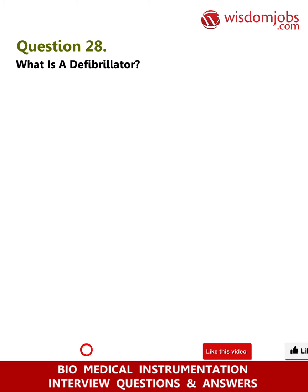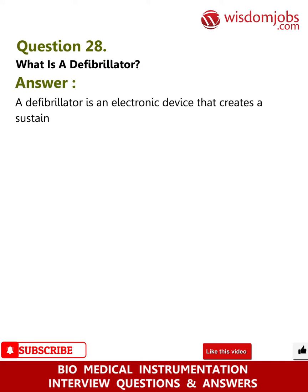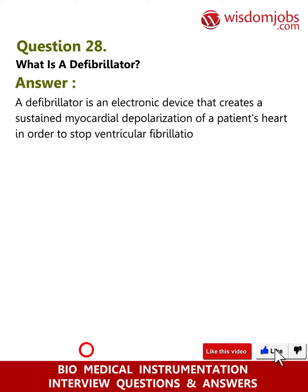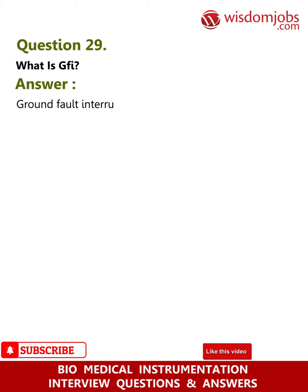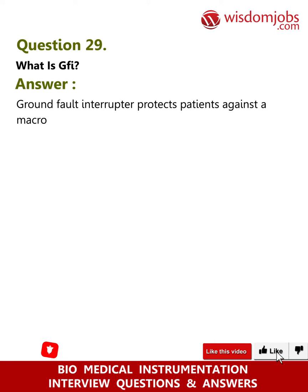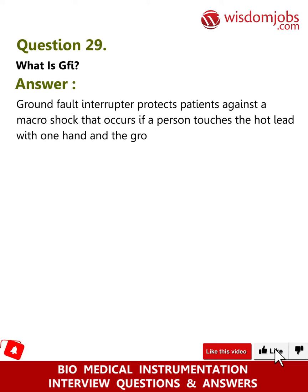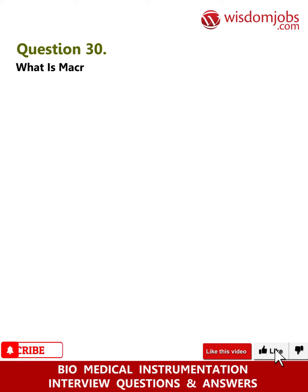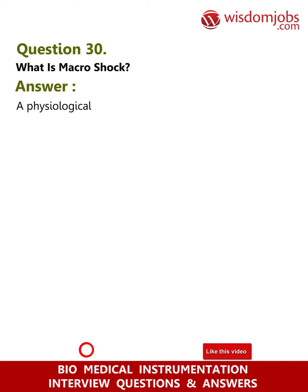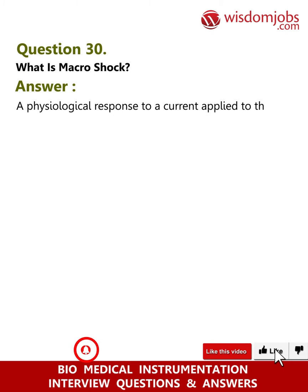Question 28: What is a defibrillator? Answer: A defibrillator is an electronic device that creates a sustained myocardial depolarization of a patient's heart in order to stop ventricular fibrillation or atrial fibrillation. Question 29: What is GFI? Answer: A ground fault interruptor protects patients against macro shock that occurs if a person touches the hot lead with one hand and the ground with the other.